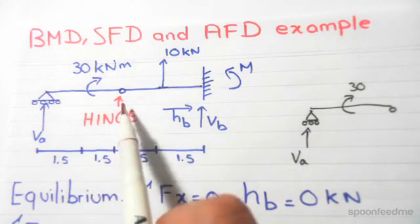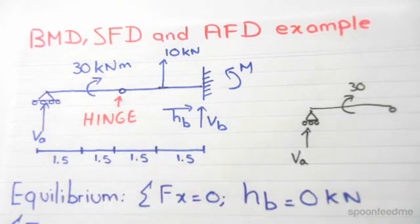In the middle of the structure we have a hinge. Now, what is a hinge? A hinge is a point in a structure which is free to rotate. There is no moment about that point because there is no moment restraint, so it is free to rotate. The sum of moments about a hinge is always equal to zero. Make sure you remember that.